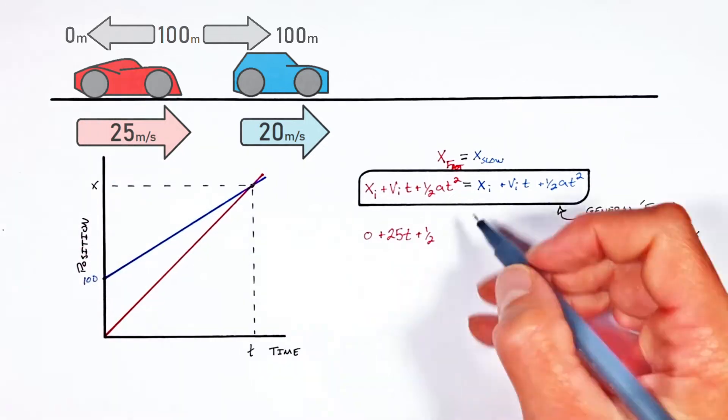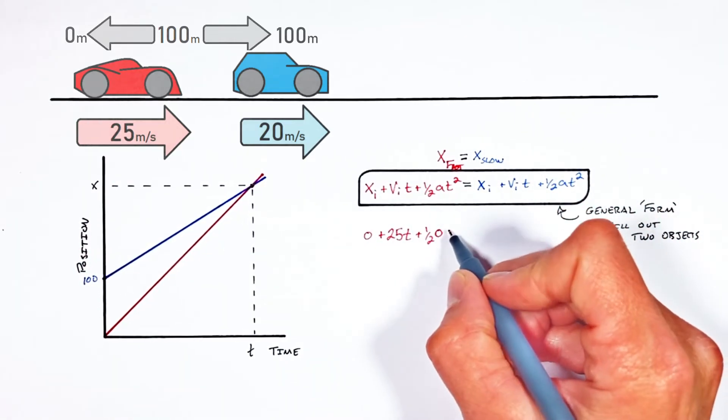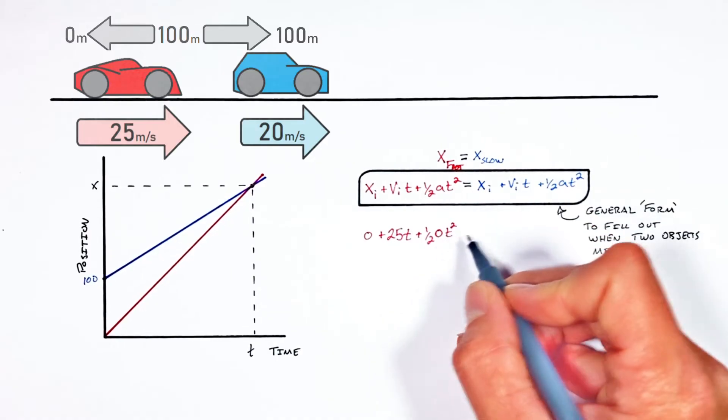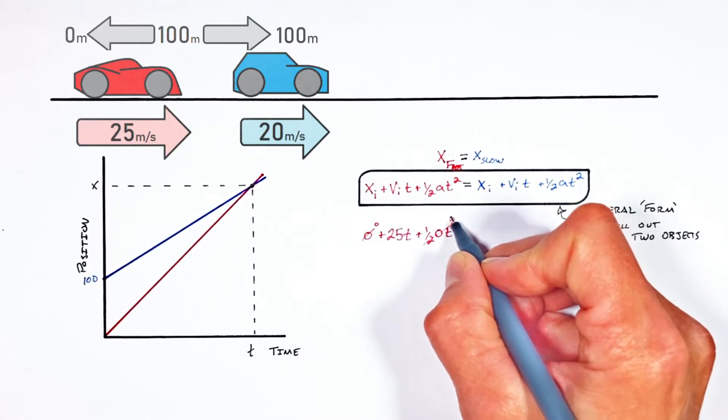But neither of these cars are accelerating. They're both moving at a constant velocity, which means the acceleration is zero. And again, we don't know time. Realize both of these terms are zeros.